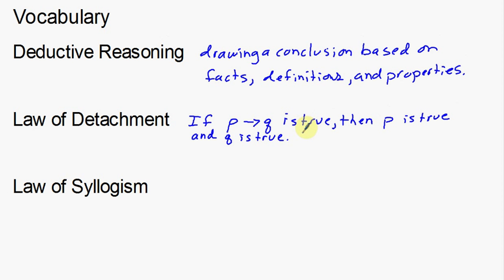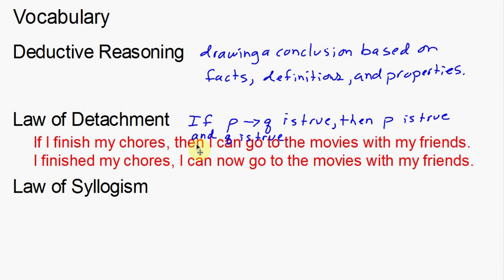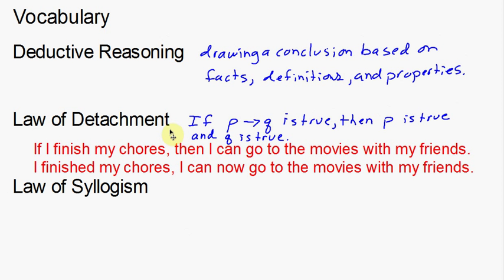So if the entire statement is true, that also means the pieces of that statement are going to be true. Here's a quick example of what the law of detachment might use. If P, then Q — so if I have a conditional statement that is true: if I finish my chores, then I can go to the movies with my friends. That is a conditional statement. So if both of those parts are true — my parents say I can go to the movies with my friends — then the individual pieces will also hold true. If I did finish my chores, then I now go to the movies with my friends. Both of those are going to be true. So that's an example of the law of detachment.